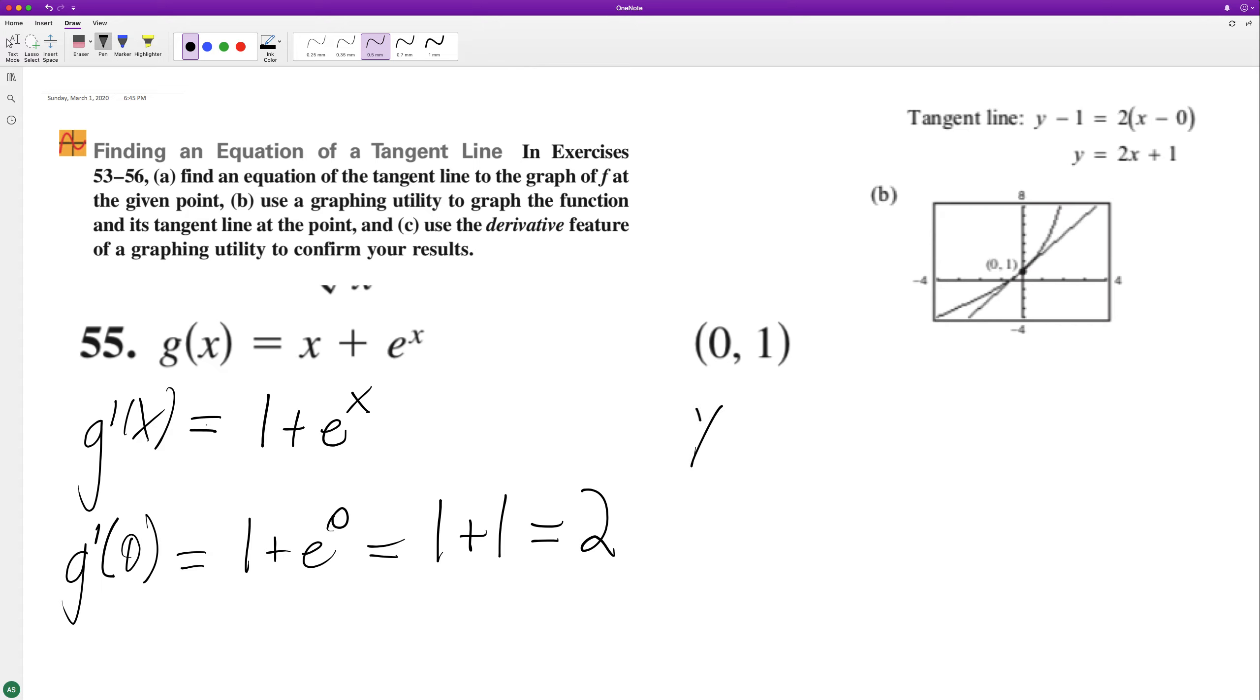Now plug this into the point-slope form: y minus 1 is equal to 2 times the quantity (x minus 0).